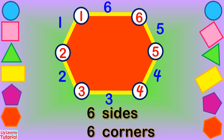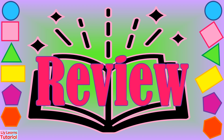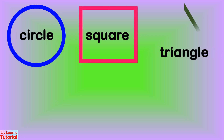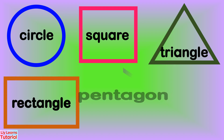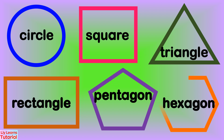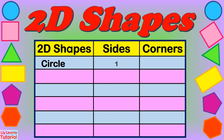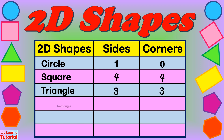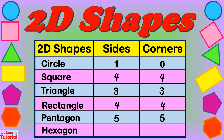Let's review the properties of 2D shapes. Circle, Square, Triangle, Rectangle, Pentagon, Hexagon. A circle has one curved side and zero corners. A square has four sides and four corners. A triangle has three sides and three corners. A rectangle has four sides and four corners. A pentagon has five sides and five corners. A hexagon has six sides and six corners.